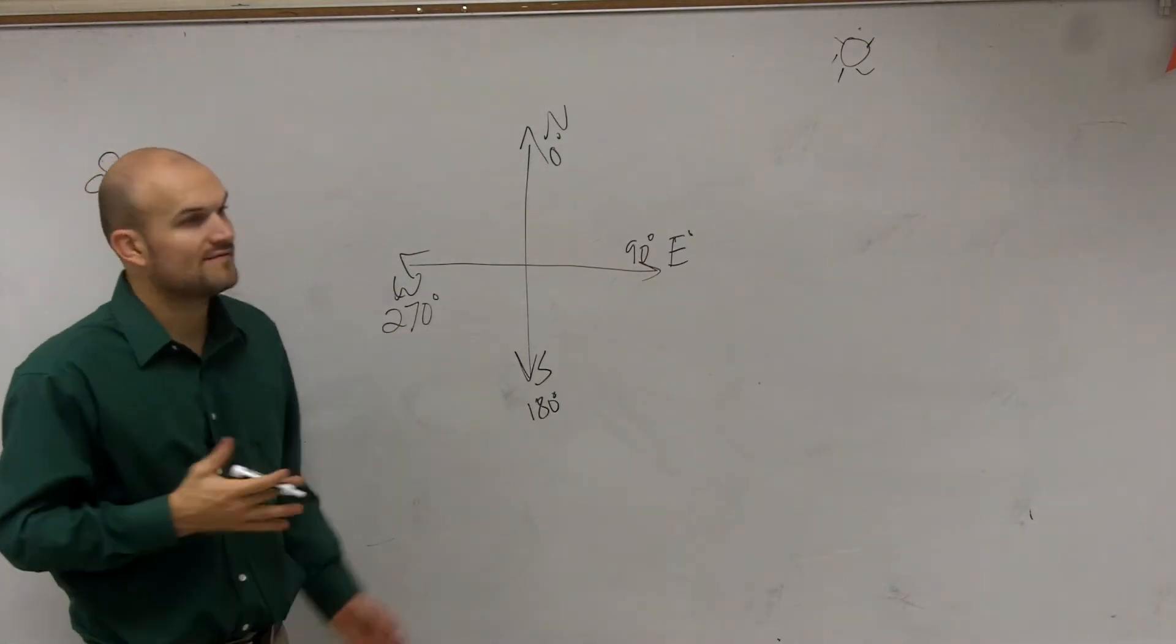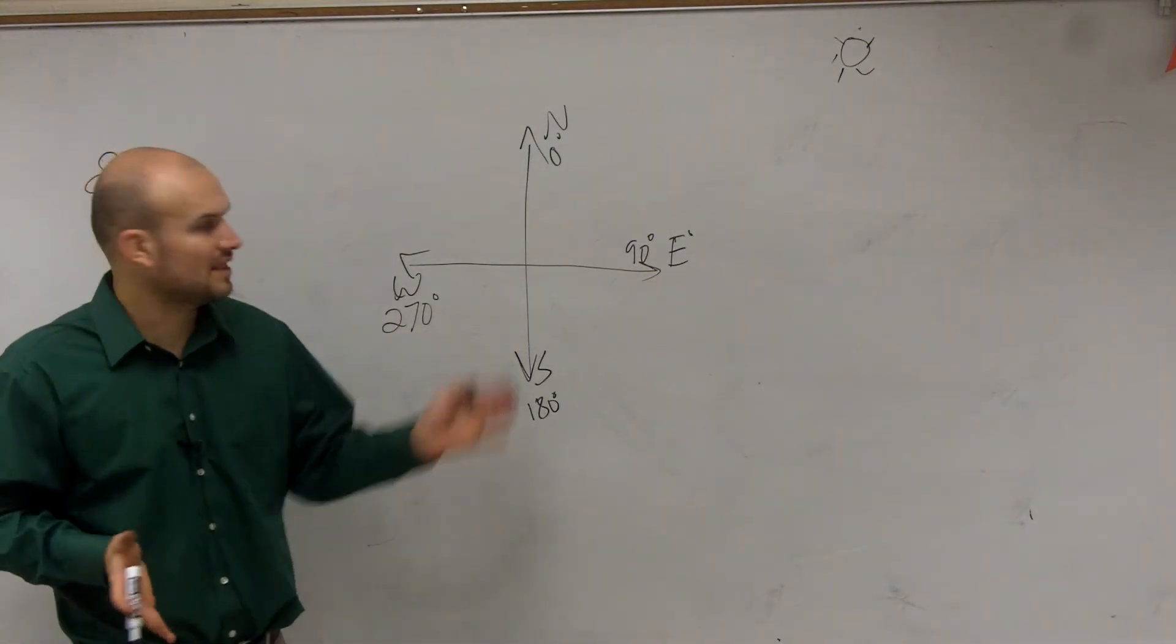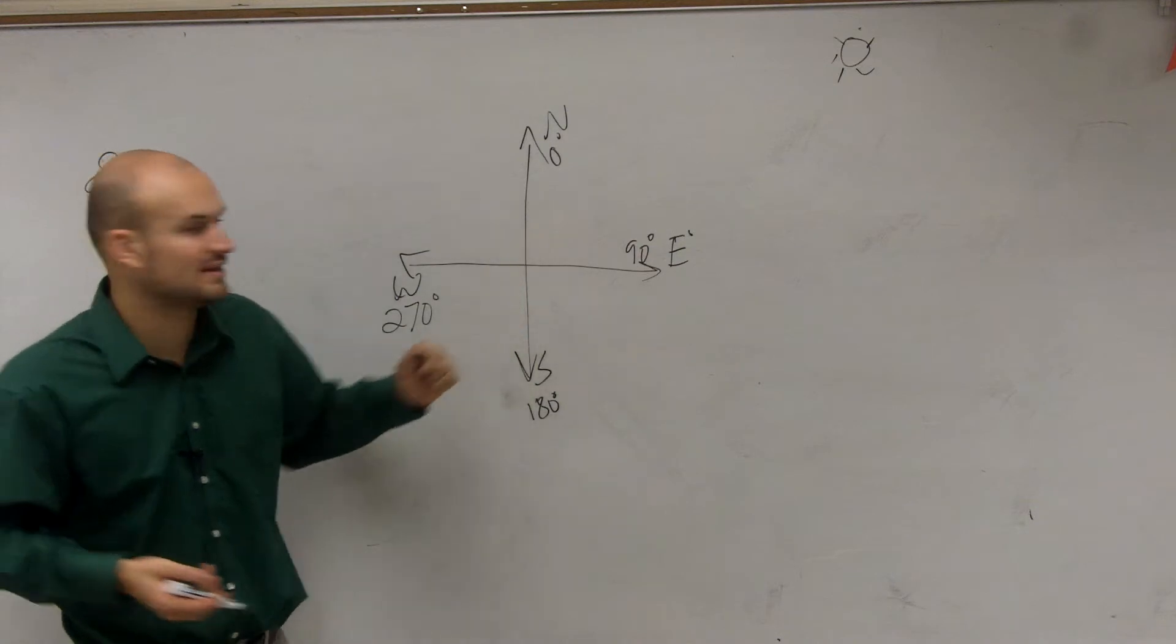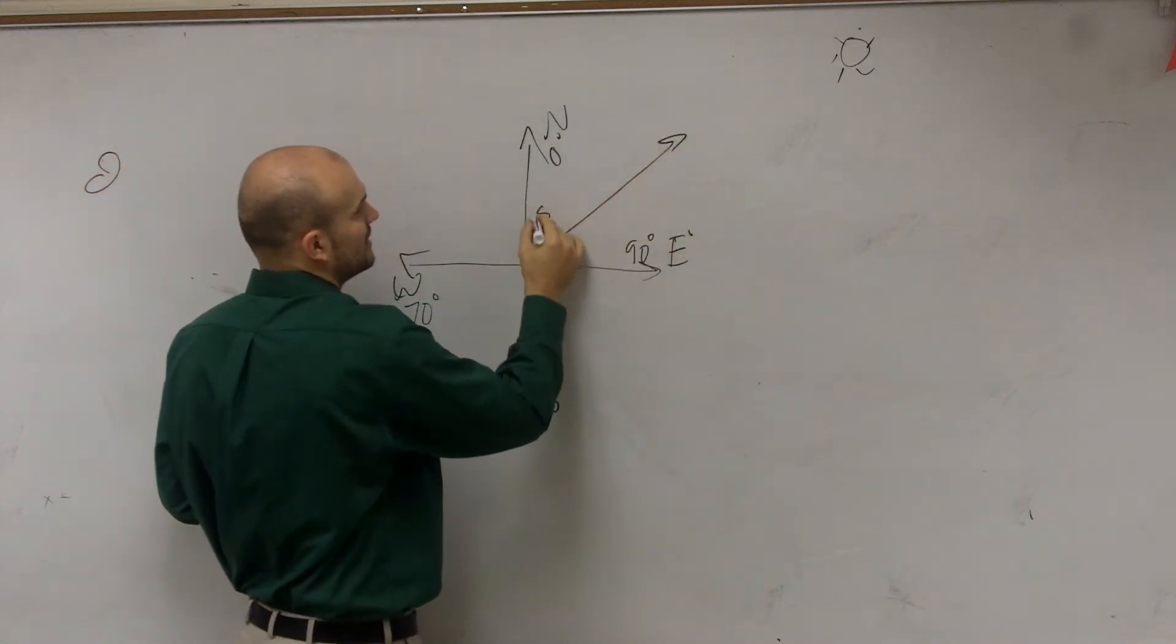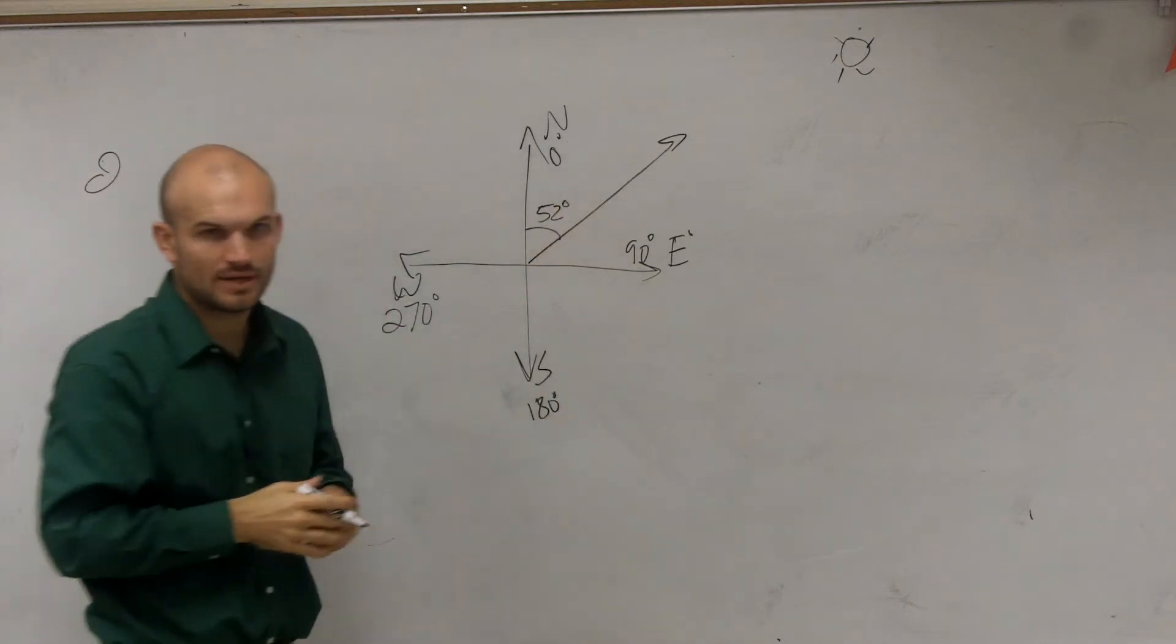All right, so if my plane is flying at a bearing of 52 degrees, it's roughly going to be right around there, at a rough estimate.